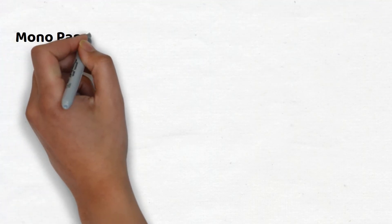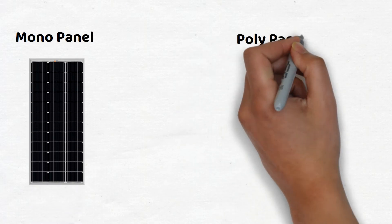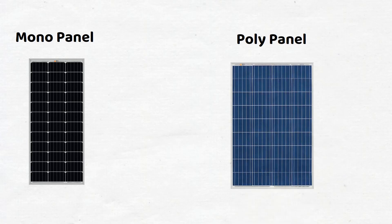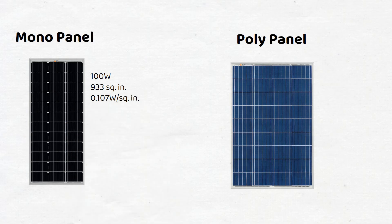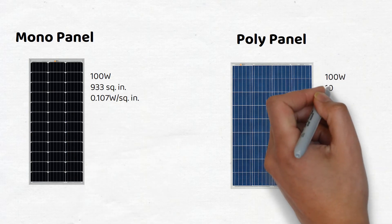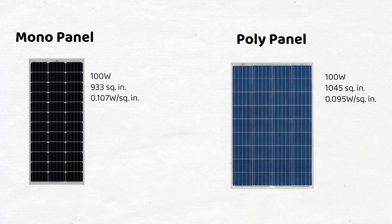A monocrystalline cell is more efficient than a polycrystalline cell. A 100W monocrystalline panel will deliver the same power as a 100W polycrystalline panel, but the polycrystalline panel needs to be bigger in order to deliver the same amount of energy. For instance, this is a 100W panel from the same manufacturer with its dimensions. We can see that a poly panel needs to have more area to deliver the same amount of energy.